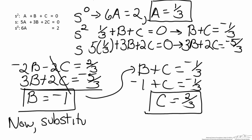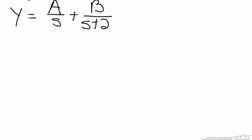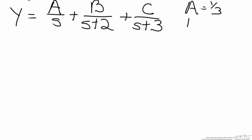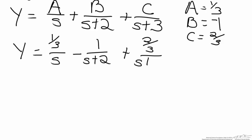Now we substitute a, b, and c into the original partial fractions equation. Recall that Y equals a over s plus b over (s plus 2) plus c over (s plus 3). We found a equals 1/3, b equals negative 1, and c equals 2/3. Therefore Y equals (1/3)/s minus 1/(s plus 2) plus (2/3)/(s plus 3). We can now take the inverse Laplace transform of each term. The inverse Laplace transform of (1/3)/s: since the inverse Laplace of 1/s is just a constant, this first term gives 1/3.